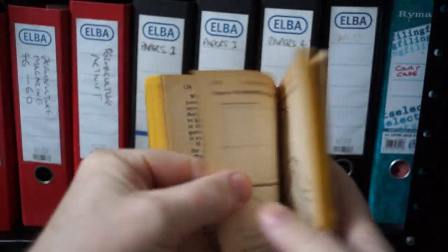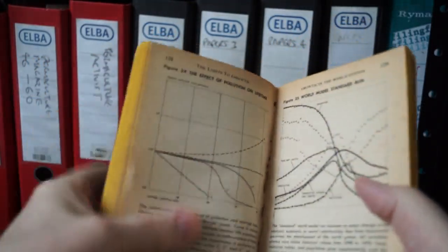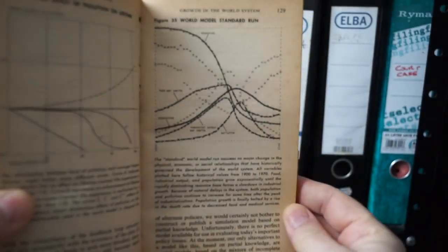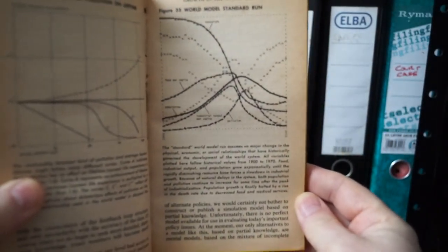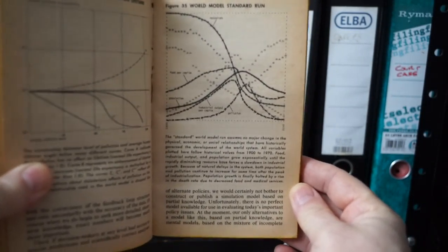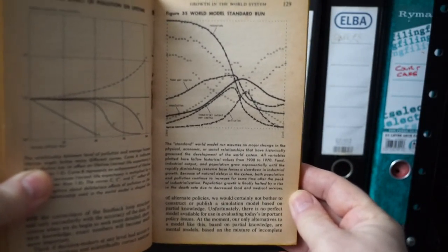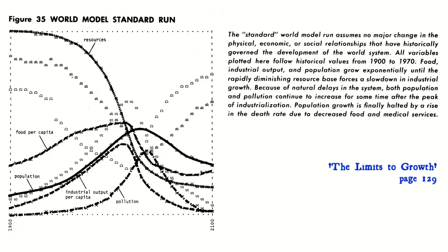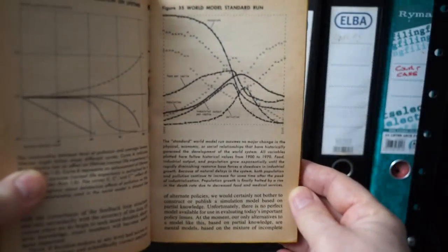Though the book showed various options for future growth, I'm going to focus on the standard run, shown in figure 35. The standard run predicted that, in the middle of the first half of the 21st century, human activity would reach peak, and then decline. These results are called Malthusian at the time, a label that is often used today. It was dismissed by the economic lobby. They had come to believe that growth was inexhaustible, and would continue forever.